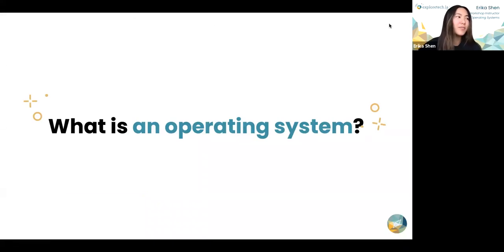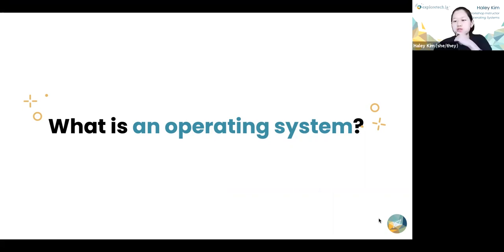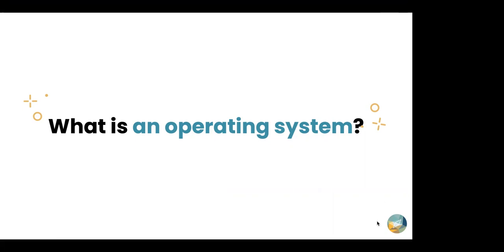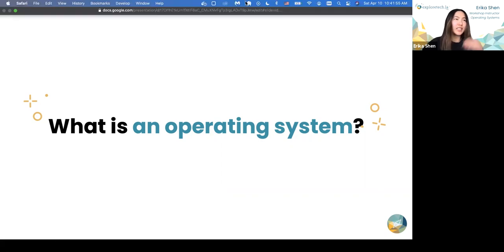I'm going to start us off. Does anyone have an idea of what an operating system is? If not, that's totally fine too. My understanding is that an operating system is the core program of a computer. One of the most important parts is a kernel, where you have an interaction between hardware and software, and it's the basis for all other higher level programs to run. Yeah, that's totally right. That's a very good idea of what an operating system is.